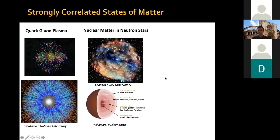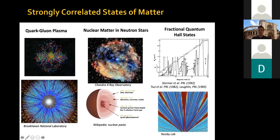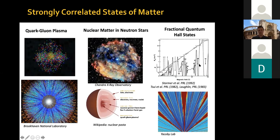A bit closer to our hearts in condensed matter physics are the fractional quantum Hall states, where you subject electrons in a two-dimensional electron gas to a strong magnetic field and realize a highly non-trivial topological state of matter. Very interesting things happen — charge objects acquire a fractional charge — and there are interesting topological phases, both abelian and non-abelian, that one can realize in these systems. Strongly correlated states of matter are truly pervasive and everywhere in physics.